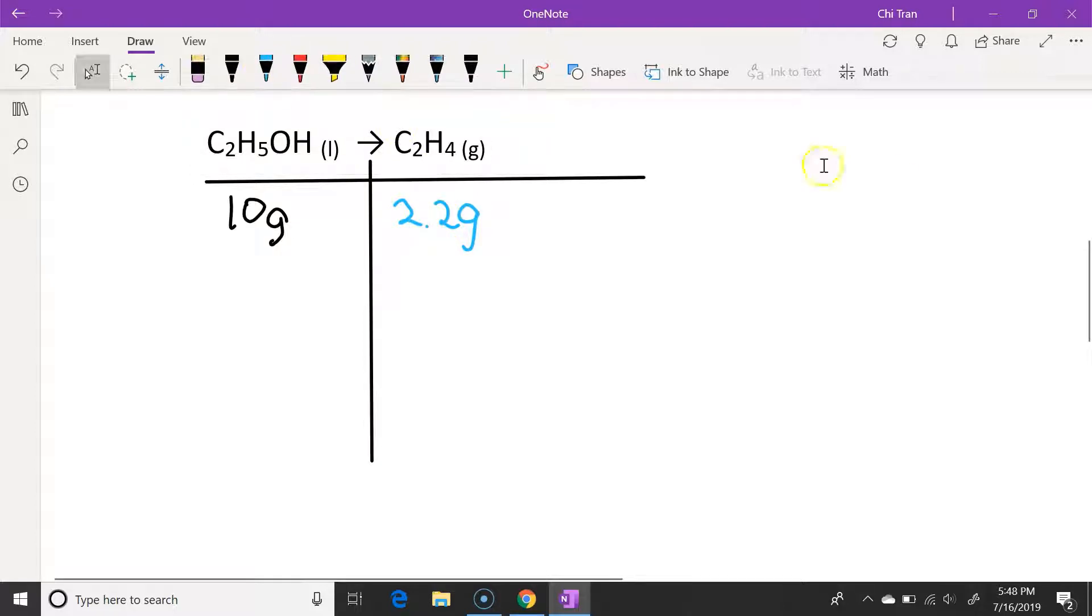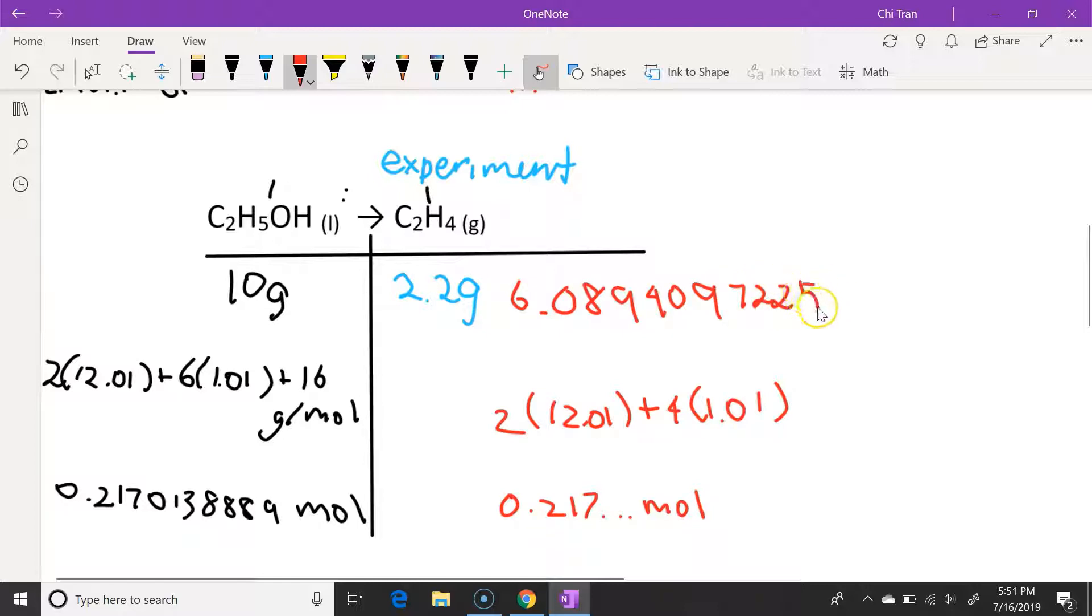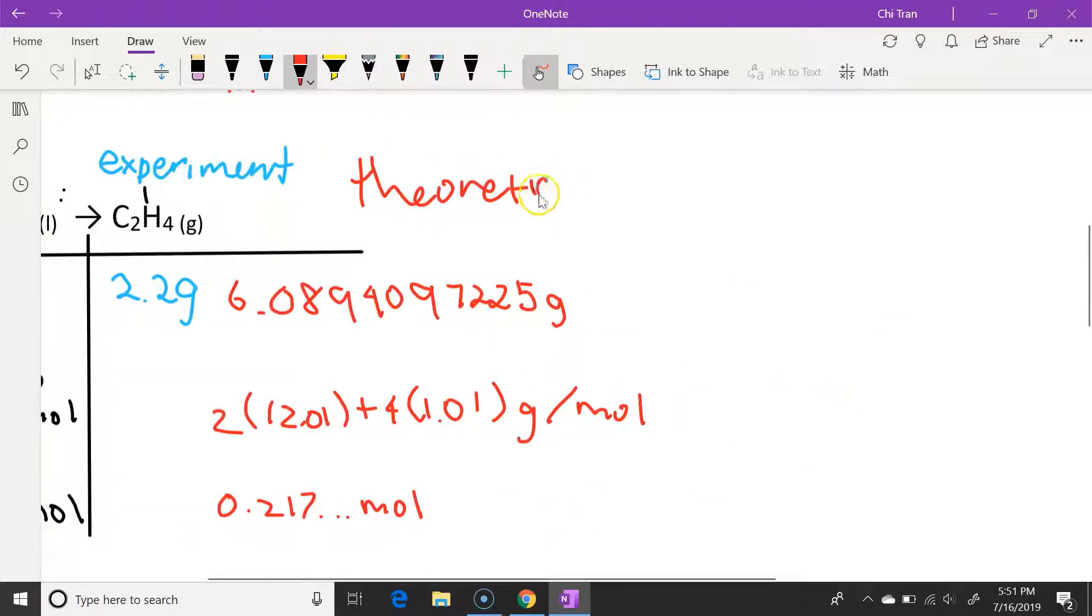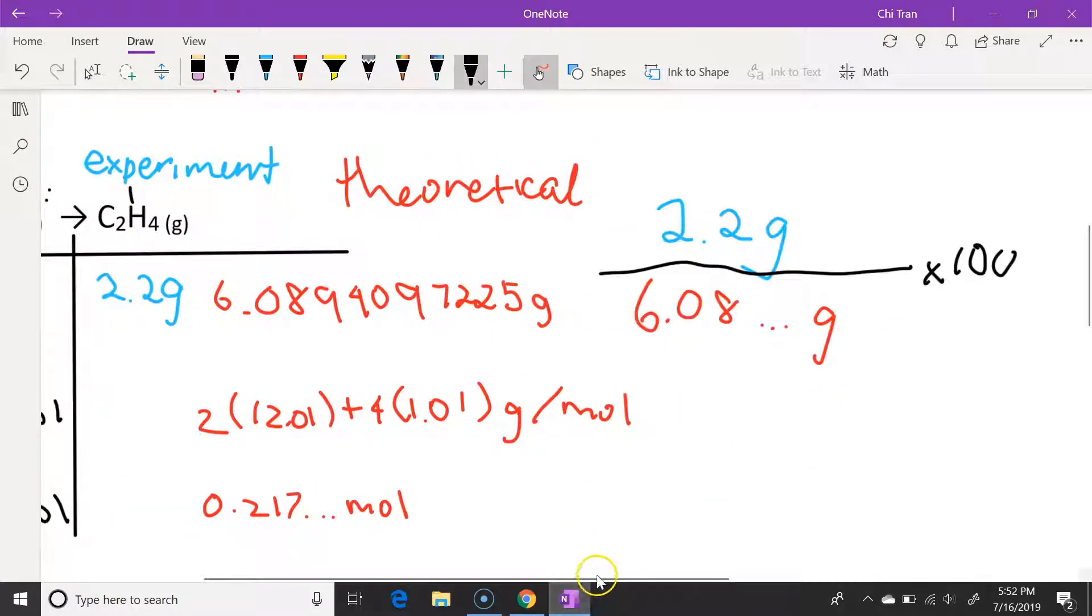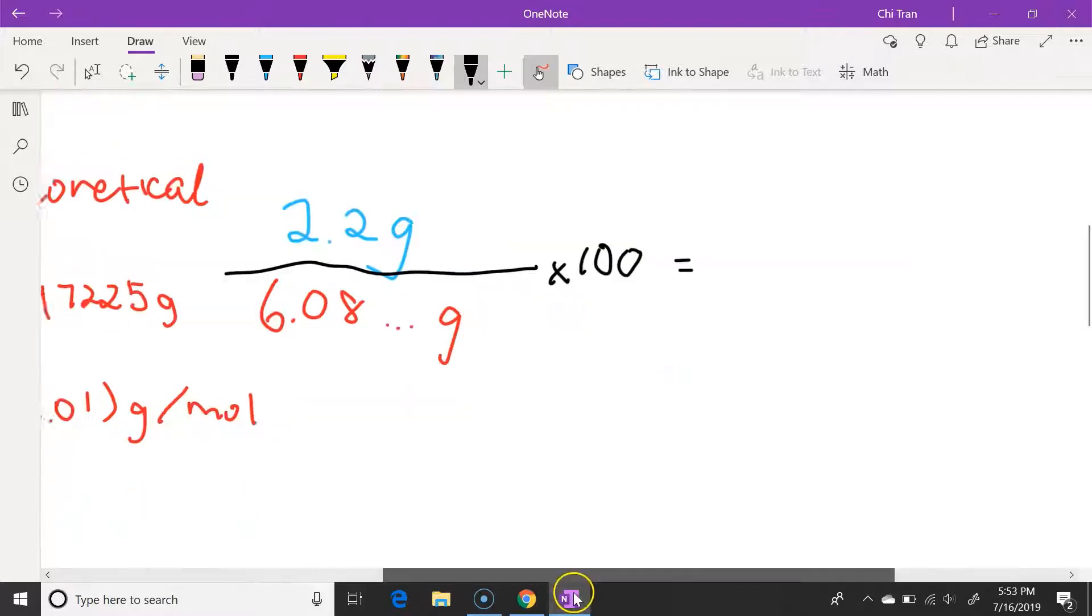We can take 10 grams of ethanol, divide the mass by the molar mass of ethanol to get the number of moles. The molar ratio is 1 to 1. So there is the same number of moles of ethene to ethanol. And we can times the number of moles by molar mass and we get mass. And that is our theoretical mass. And now we can take our experimental mass divided by our theoretical mass times 100 to get our percentage yield.